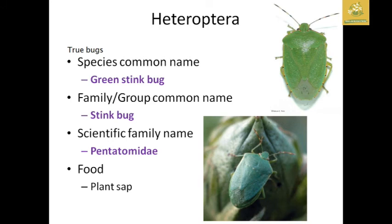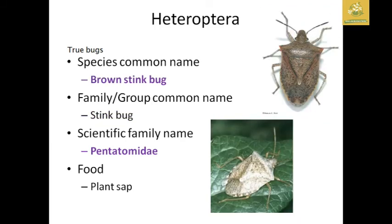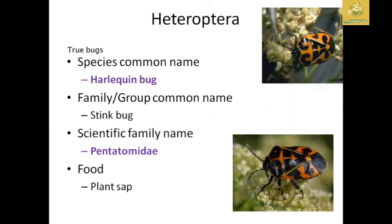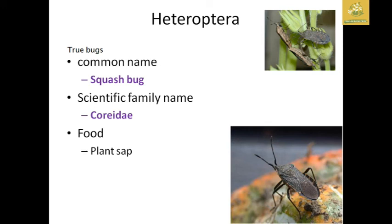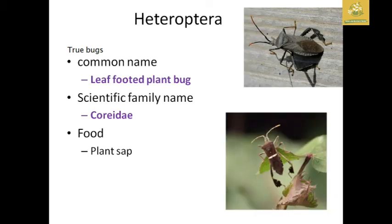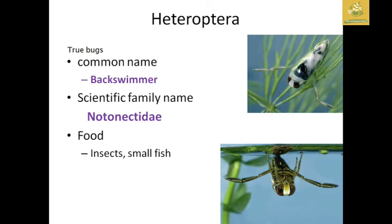In Heteroptera, the true bugs include the green stink bug (family Pentatomidae, scientific name Nezara viridula) which feeds on plant sap. The brown stink bug feeds on plants competitively. The harlequin bug and spined soldier bug also come under Pentatomidae. The squash bug comes under family Coreidae, as does the leaf-footed plant bug. The giant water bug is a predator feeding on insects and small fish, belonging to family Belostomatidae.